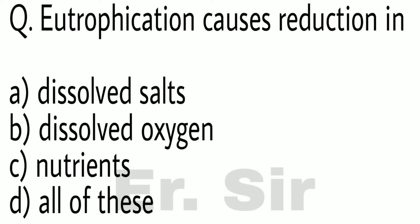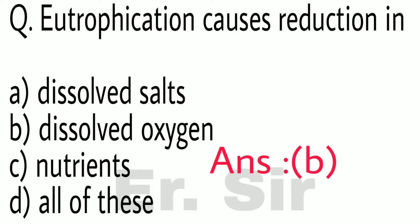Eutrophication causes reduction in — (A) Dissolved salts, (B) Dissolved oxygen, (C) Nutrients, (D) All of these. The correct option is B: Dissolved oxygen.